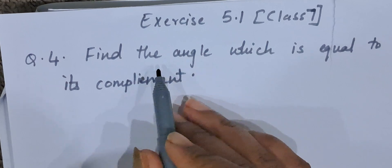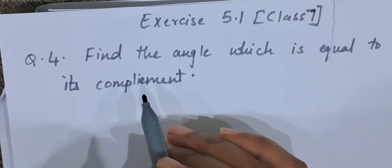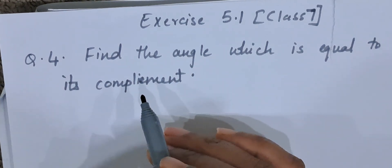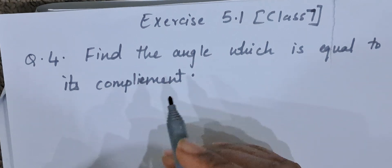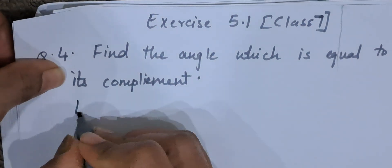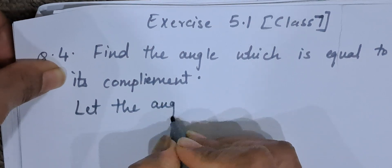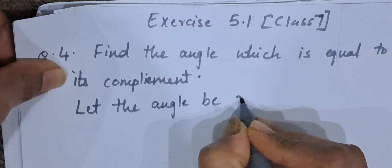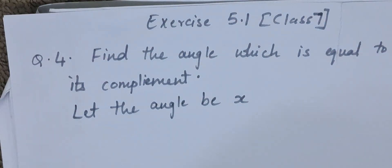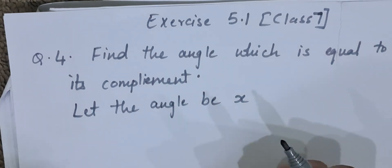Here they are asking us to find the angle which is equal to its complement. That means both the angles should be equal. Now we will begin. Let the angle be x. Let us take the angle to be x. Now what they are telling? The angle should be equal to its complement.